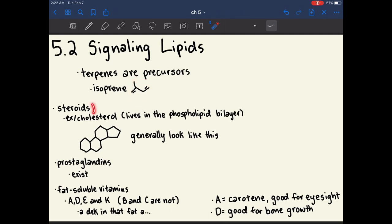One class of signaling lipids are steroids. So steroids act as hormones. They travel through your blood. They signal to different parts of your body. One good example of a steroid is cholesterol, and cholesterol lives in the phospholipid bilayer. Maybe lives in is the wrong word. Is in the phospholipid bilayer. Cholesterol is necessary to keep your cells fluid. It's definitely in other places as well.